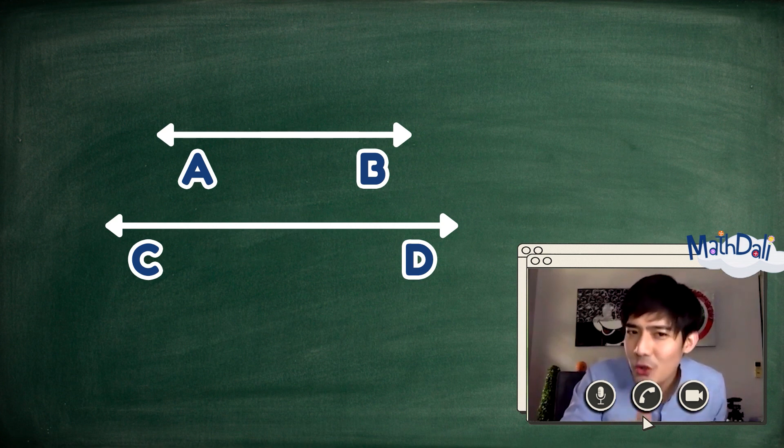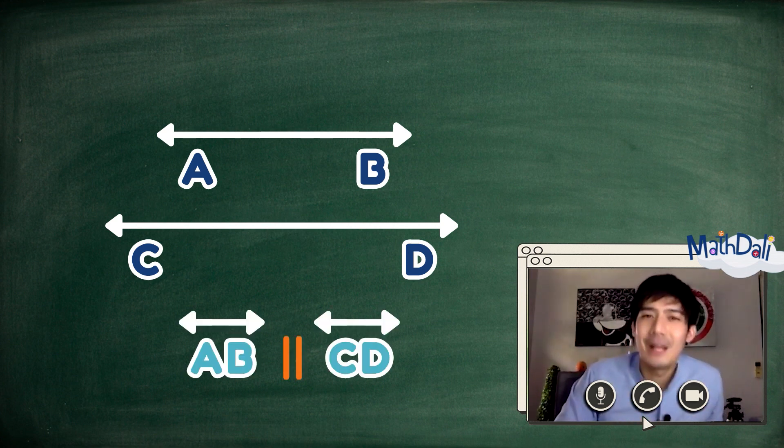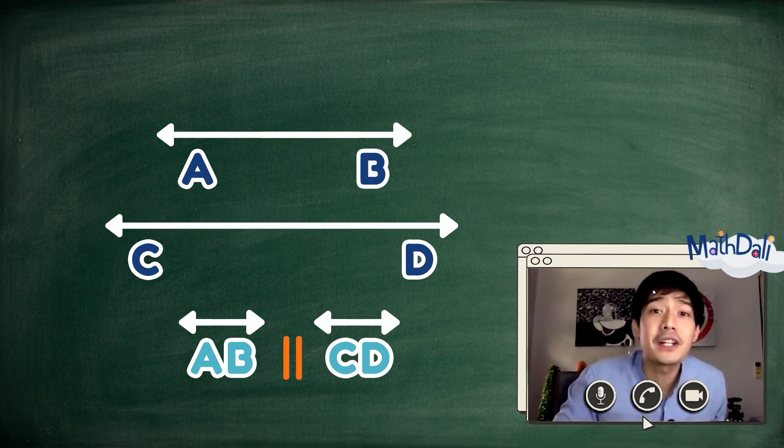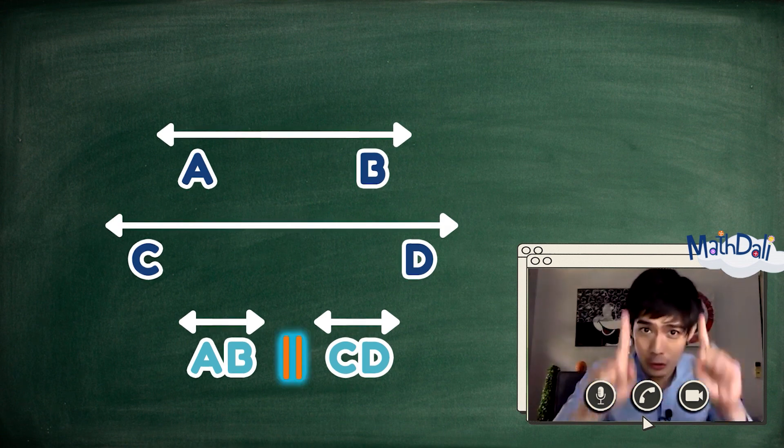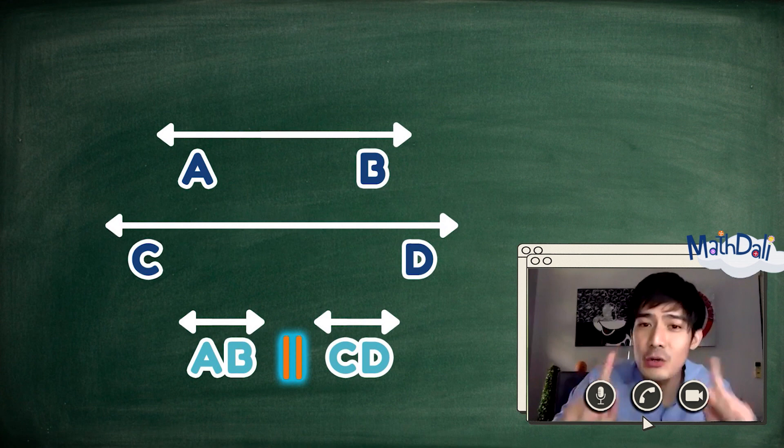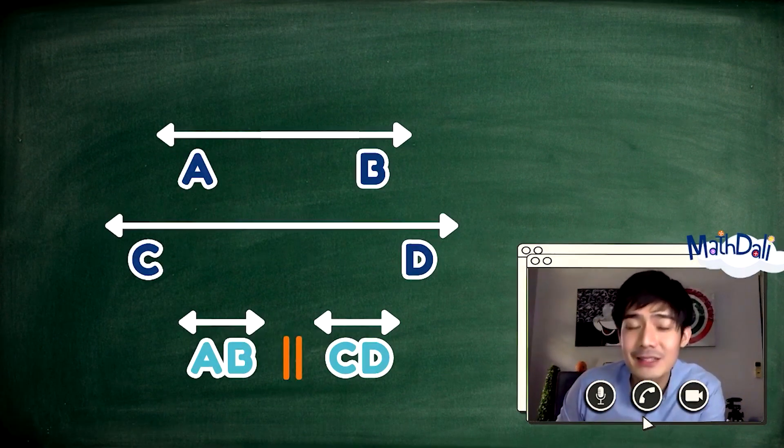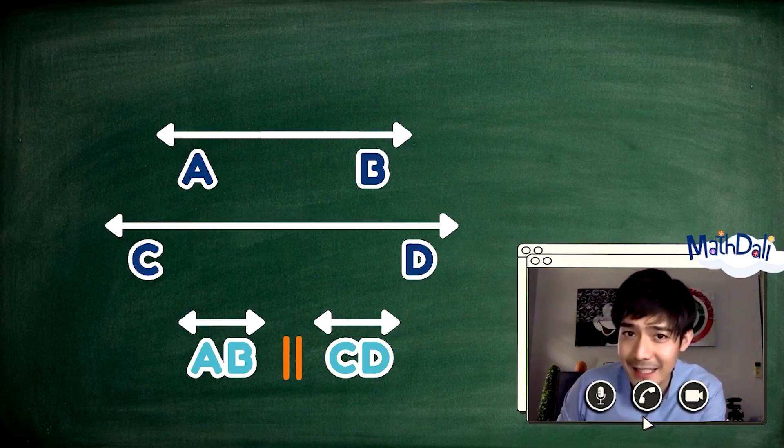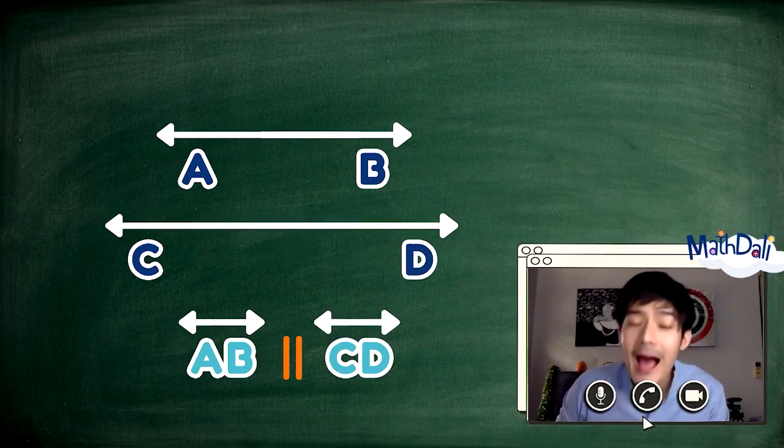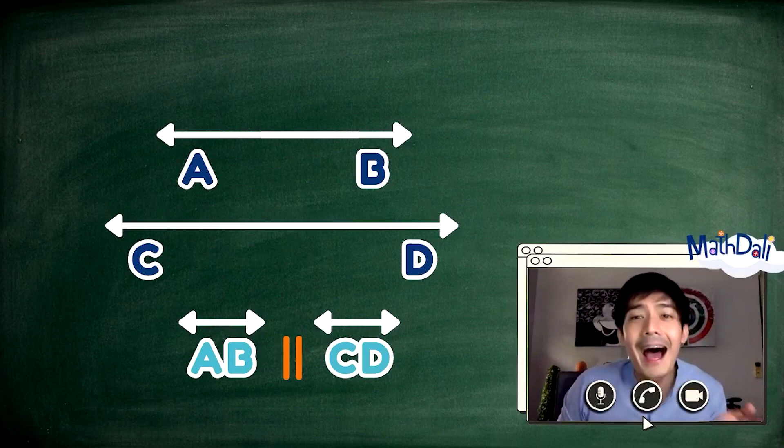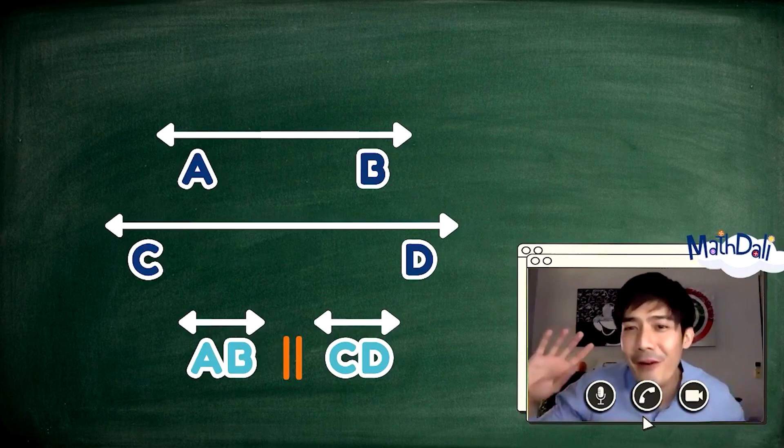Ito ay ginagamitan ng dalawang paralel vertical lines. Kaya pag sinulat natin ito, ang line AB is paralel to line CD. Pwede rin ang line CD ay paralel sa line AB. Pwede rin ang line DC is paralel to line BA. At marami pang combinations yan.